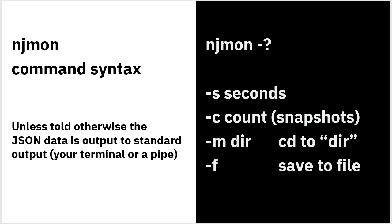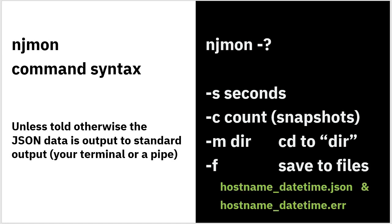Unless otherwise told, NJMon will output the JSON data to your standard output on screen. So if you suddenly see a whole row of stats zooming up the screen, you realize you forgot to either pipe it into some other command or use -F to save it to a file. It will create a file in the local directory, or the one you specified with -M, using the hostname and the time and date as the filename in lowercase with .json extension. There will also be a .err file for errors — if there are any problems, it will report those and switch off collecting those particular stats and carry on.